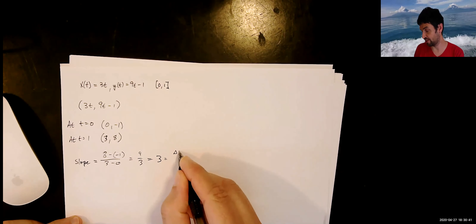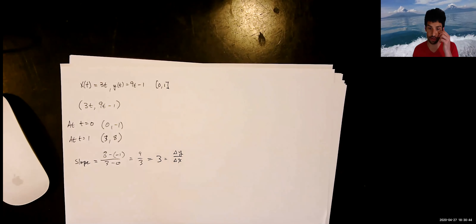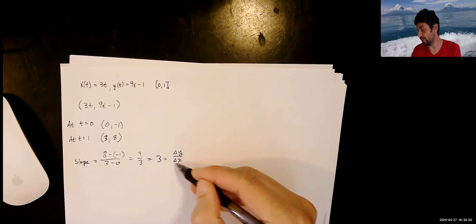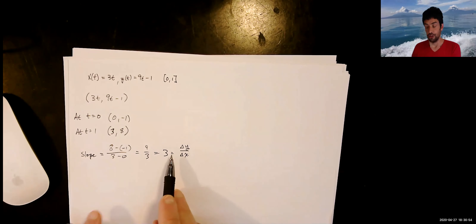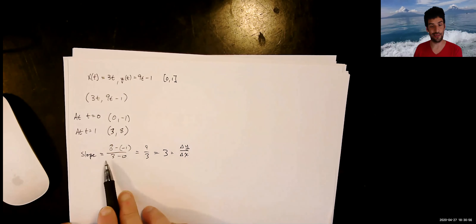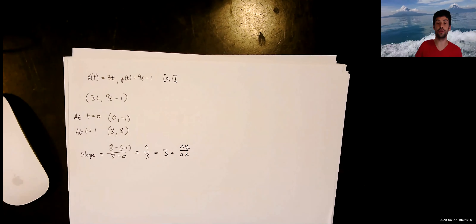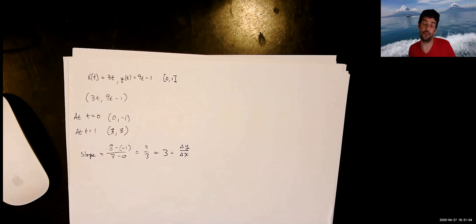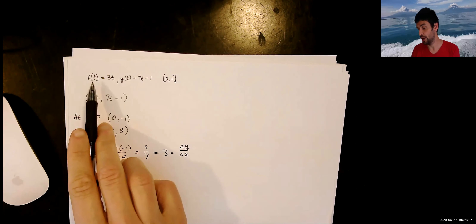Let's remember what that is. This 9 over 3 really tells us what's going on — we're taking the ratio of the change in y to the change in x. If you think back to Calc 1, this was our notion of the derivative: we look at delta y over delta x, and in the limit we get dy/dx.